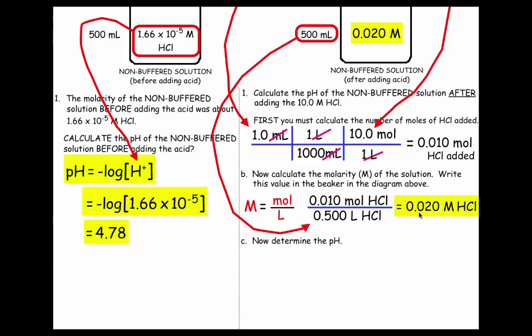Well, the pH is, now it's going to be the negative log of this. pH is negative log of the H. Hydrogen ion concentration is 0.020. Use your calculator, and you get a pH of 1.7. Notice, in a non-buffered system, the pH is dropping a lot.